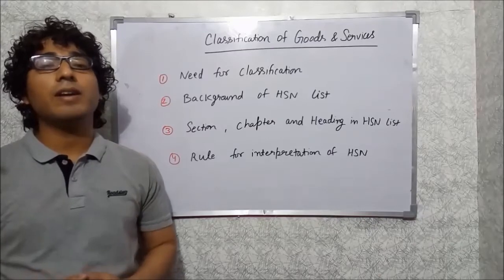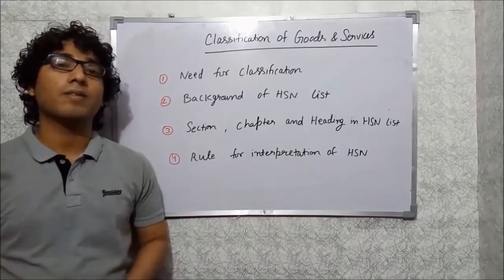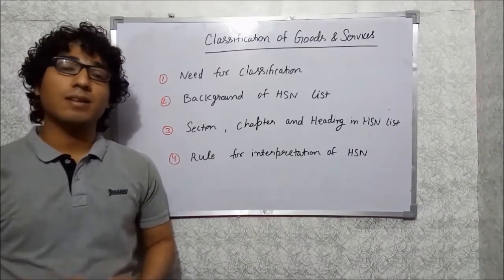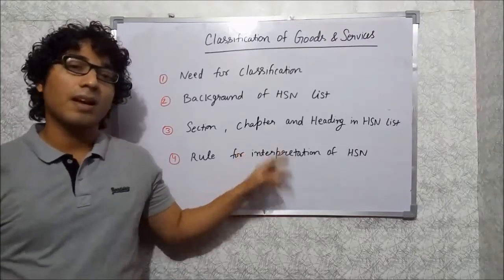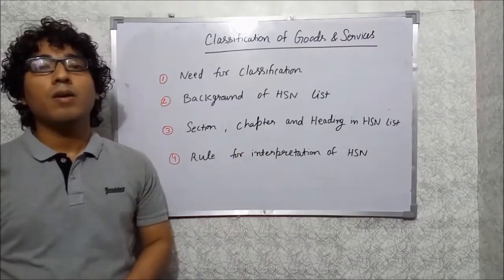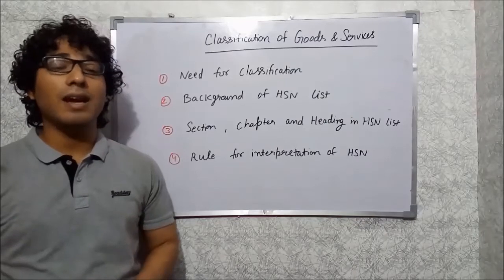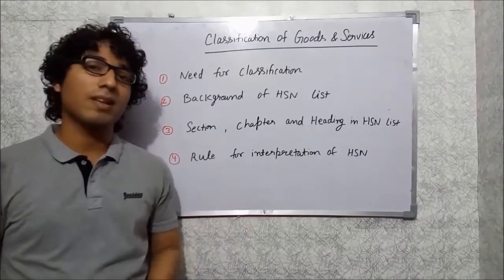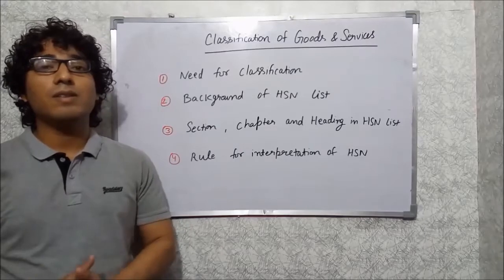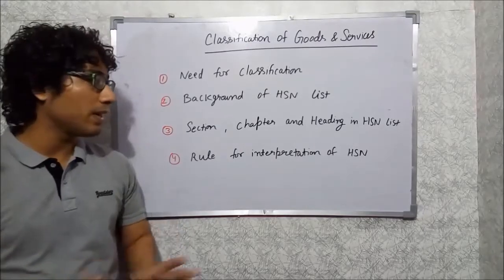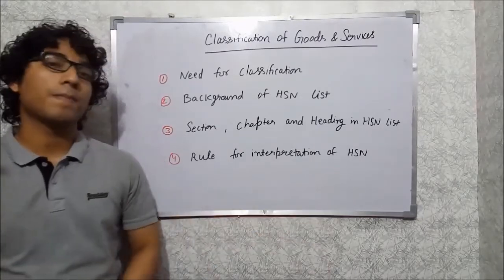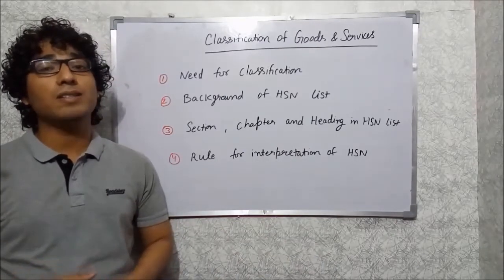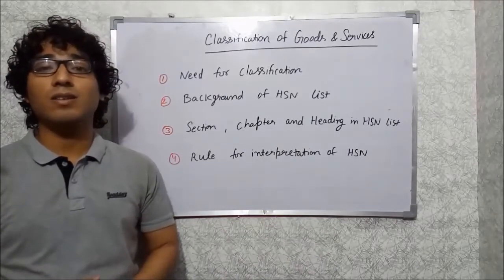The HSN list is divided into different segments. The first segment is the section, the second is the chapter, and the third is the heading. We will discuss what exactly section, heading, and chapter mean under this topic. And finally we will cover about how to interpret the HSN code list, including the rules for interpretation.